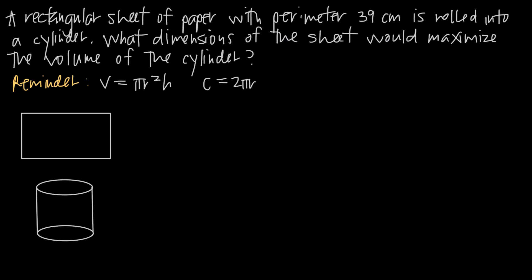In this video, we're going to be talking about applied optimization. In this particular problem, we've been told that a rectangular sheet of paper with perimeter 39 centimeters is going to be rolled into a cylinder. The cylinder would have hollow ends — we're just going to take a rectangle and roll it around on itself until it forms a cylinder. What dimensions of the sheet would maximize the volume of the cylinder?